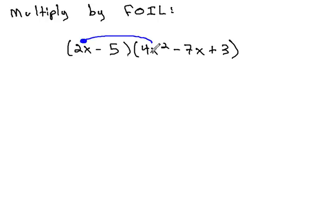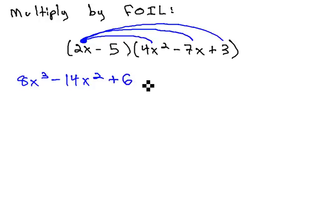2x times 4x squared is 8x cubed. Continuing to distribute, 2x times negative 7x is negative 14x squared. 2x times positive 3 is positive 6x.